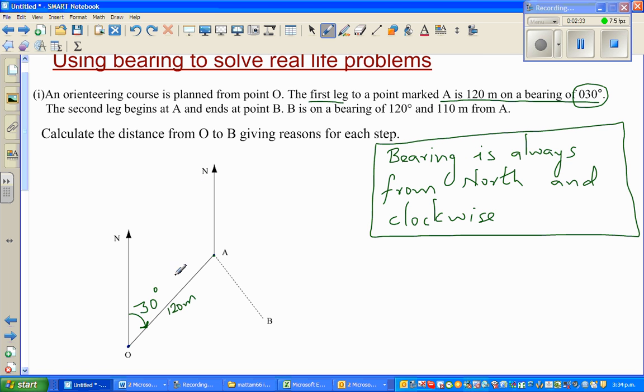The second leg - this is your first leg of the orienteering course, this is your second leg. The second leg begins at A and ends at point B. B is at a bearing of 120 degrees and 110 meters from A. So this is again from the north going clockwise, this is 120 degrees and this is 110 meters.